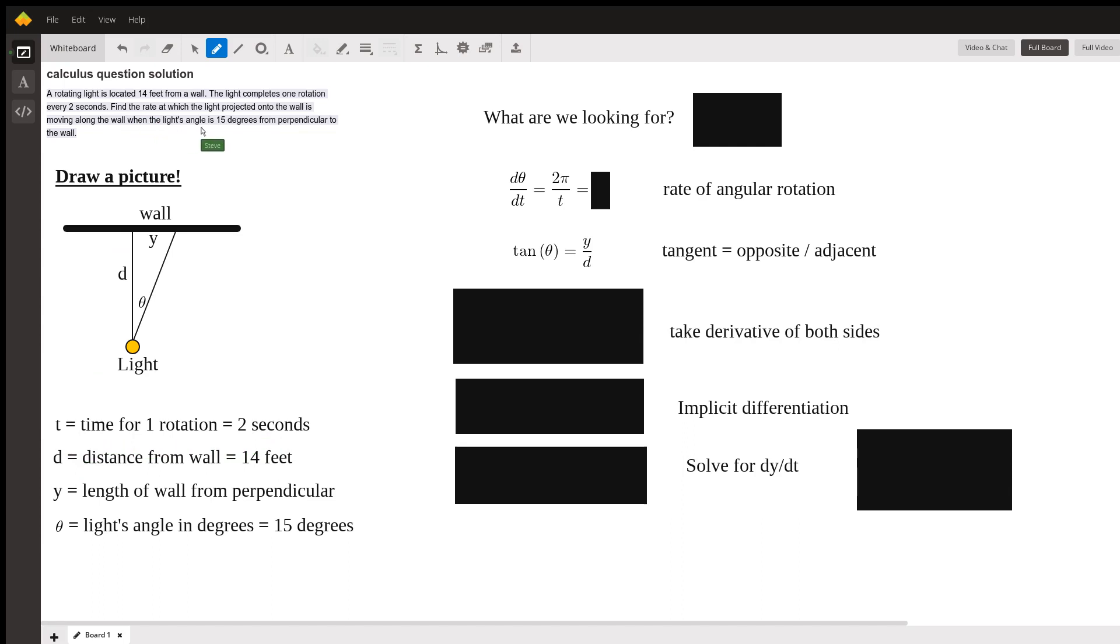Next sentence, find the rate at which the light projected onto the wall is moving along the wall. I've defined this distance y which is the distance along the wall from basically this perpendicular. So I have a right angle here and y is going to be the distance here that's going to be changing. That rate is going to be changing, so I have y and it's going to be a differential rate that I'm looking for.